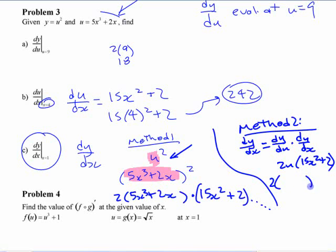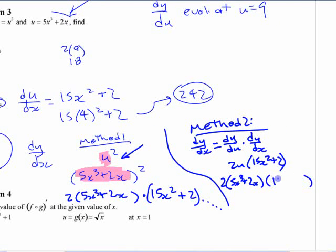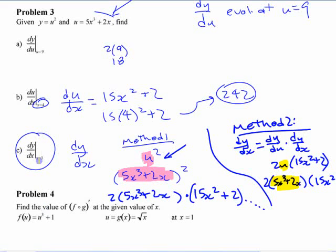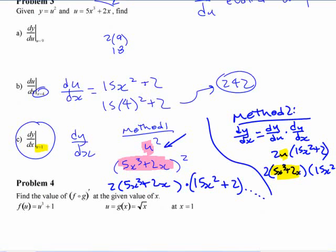All right? So this would be whatever u, the function u is 5x to the third plus 2x. And then that other part of it. Okay? So do that substitution first or second. It doesn't matter. But it's going to give you the same thing. And then, of course, you could sub in x equals 1. I won't bother doing that right now.